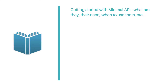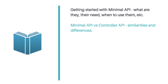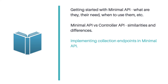Some of the topics you will learn include getting started with minimal APIs — covering what minimal APIs are, their need, when to use them, and so on. You'll also explore the differences and similarities between minimal APIs and MVC APIs, implementing a collection API using Entity Framework and dependency injection, and improving your minimal API through data transfer objects (DTOs), AutoMapper, and exception handling.